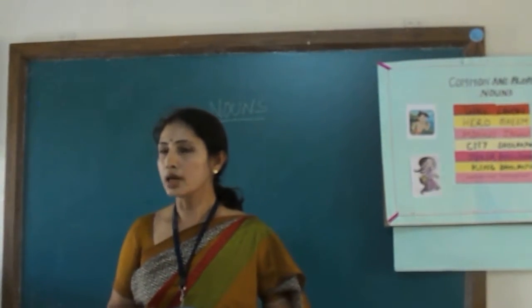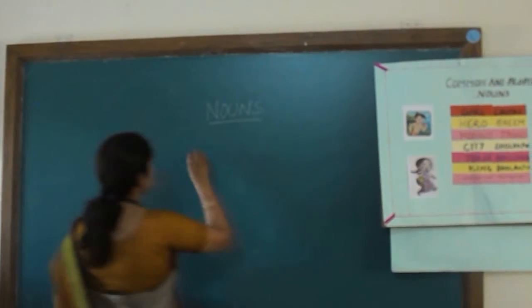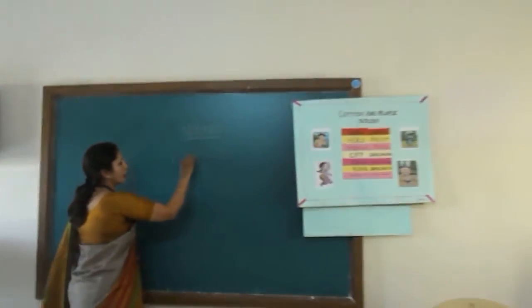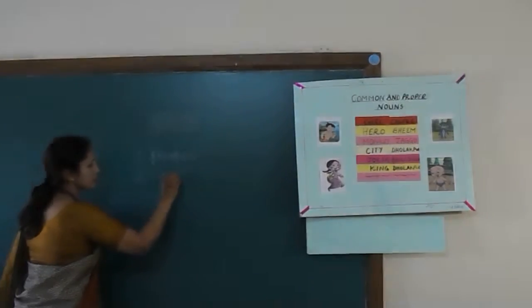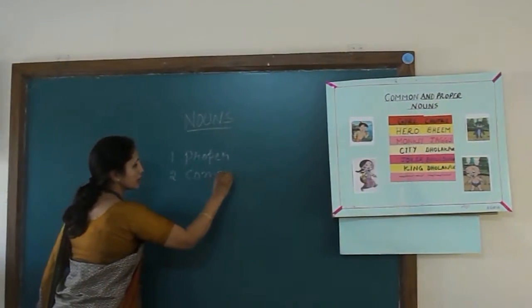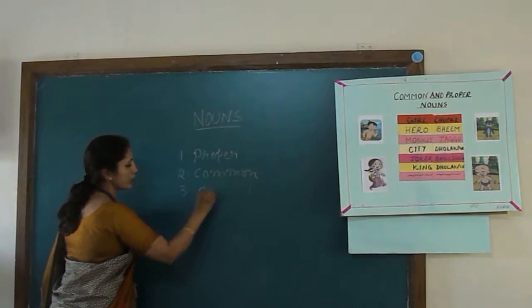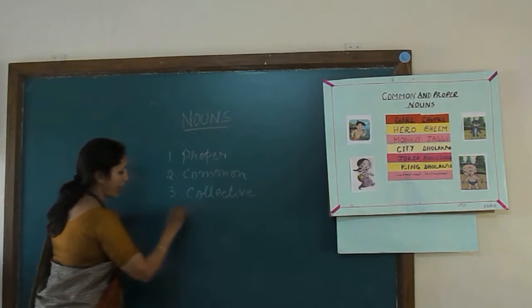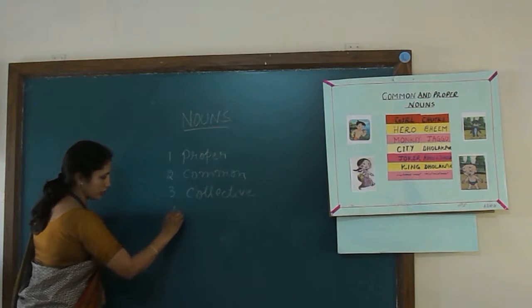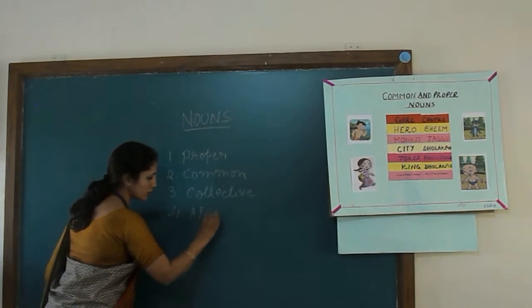Nouns are broadly categorized into four types: proper nouns, common nouns, collective nouns, and abstract nouns. So these are the four types of nouns we have.